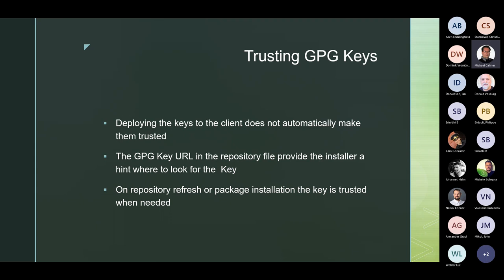About trusting: deploying the key to the client does not automatically make it trusted. Only when you add a channel to your client and that channel defines the GPG key URL, then on a repository refresh — or in Red Hat's case, mostly on package installation — it will check if the key is not already in the keyring, look up this key URL, and import it automatically. The task you need to do is just assign the channel to the client.